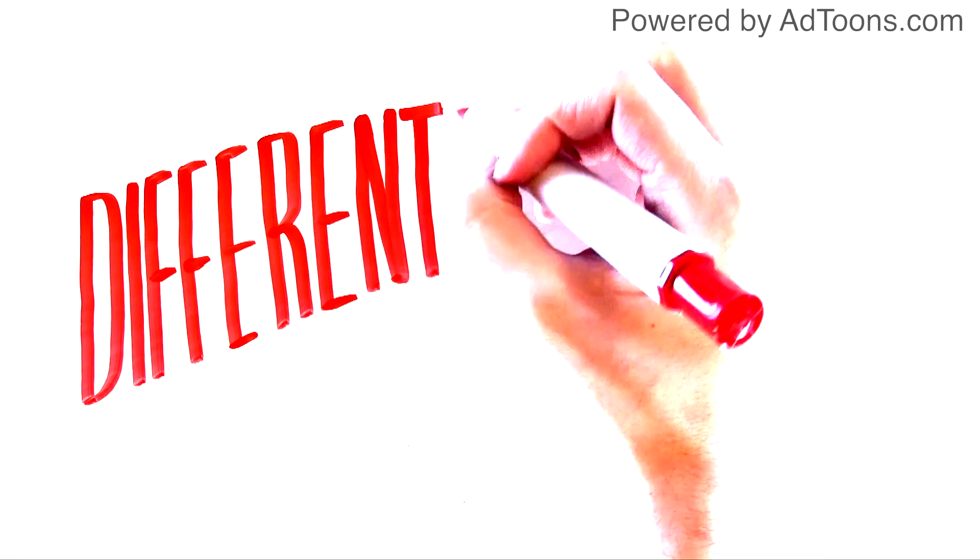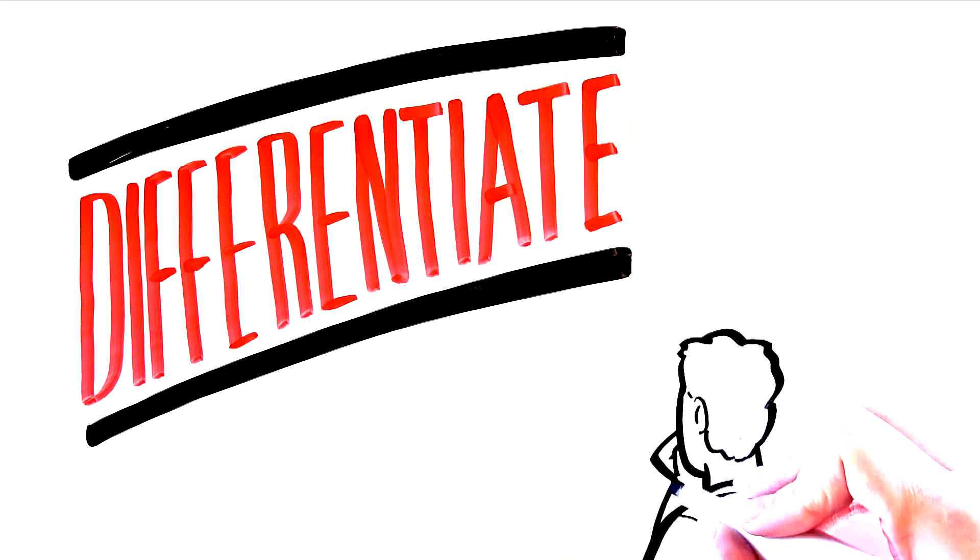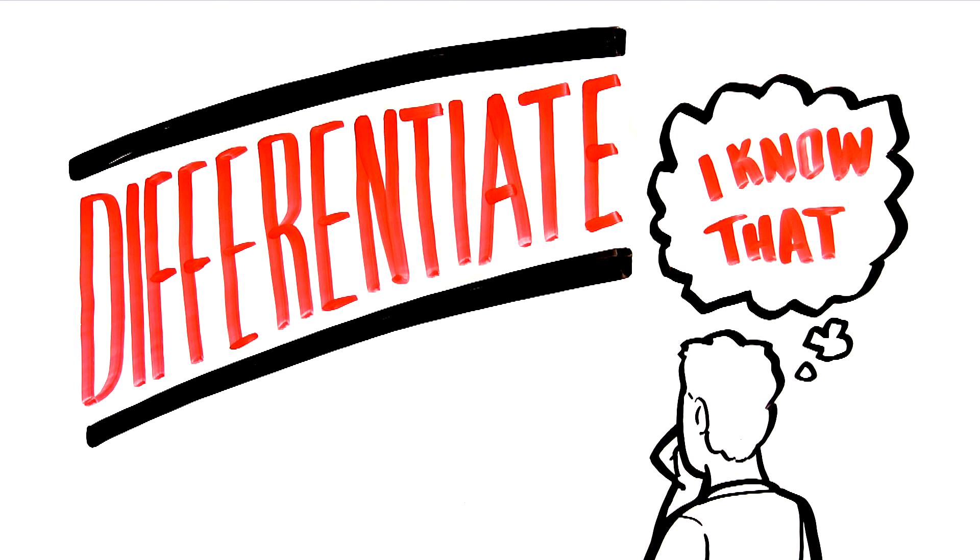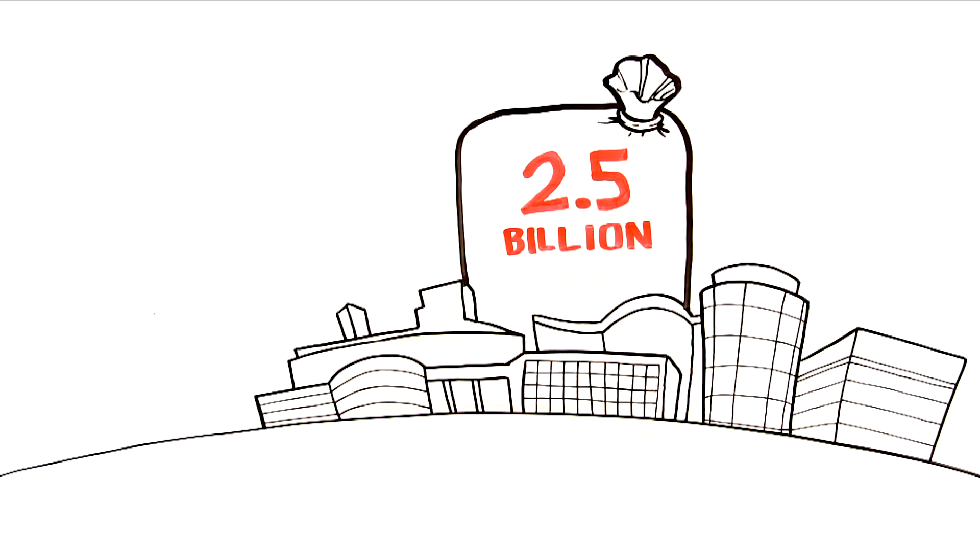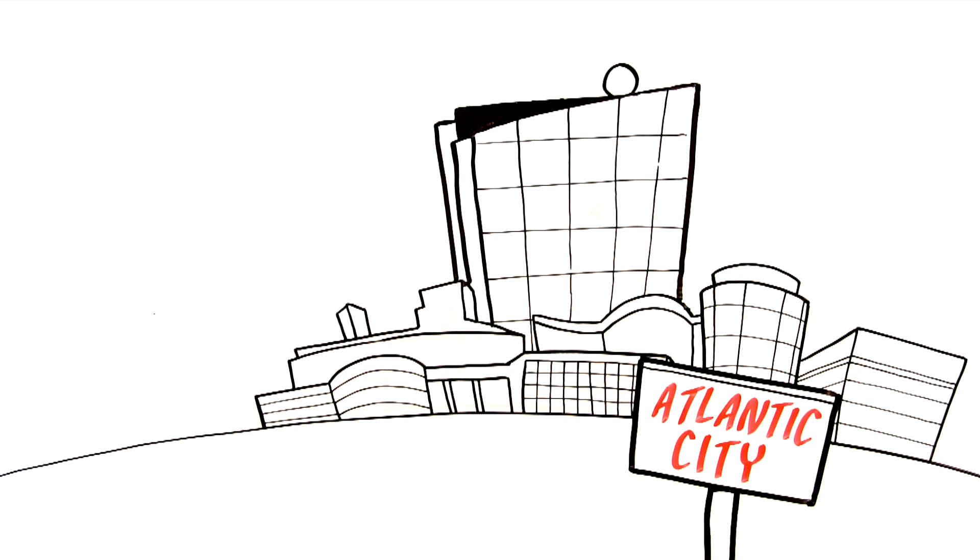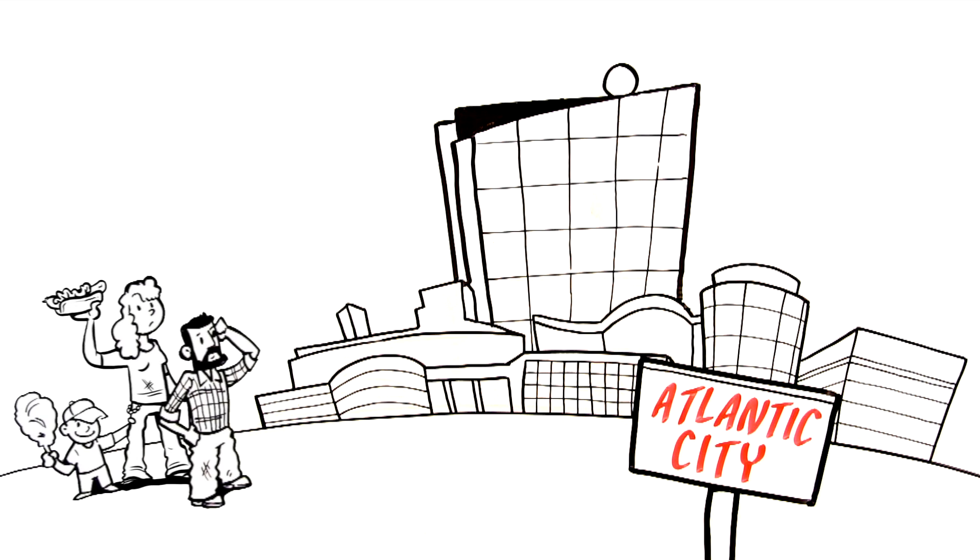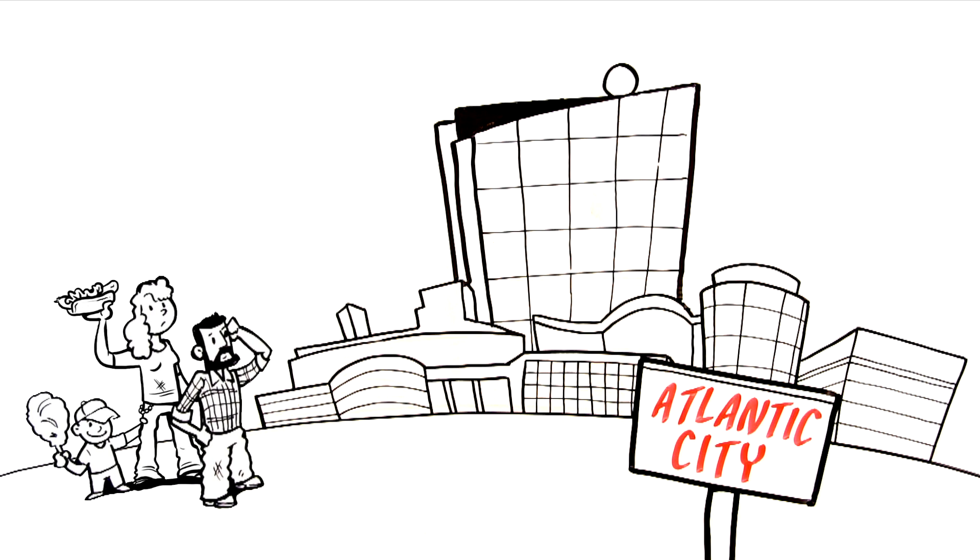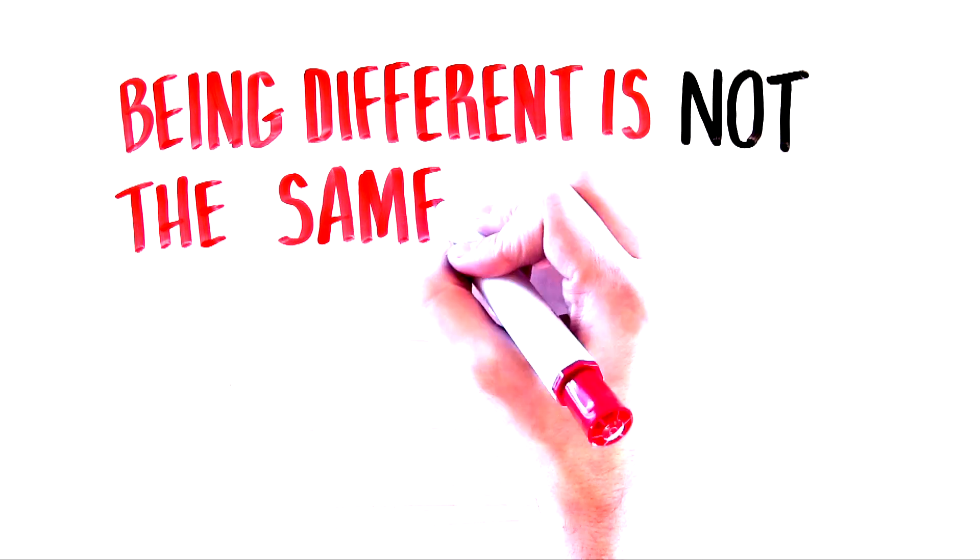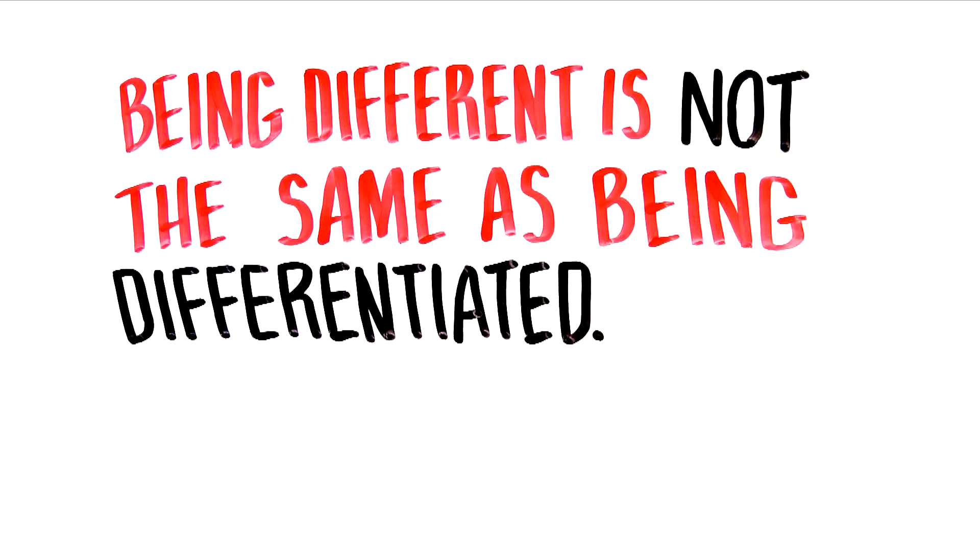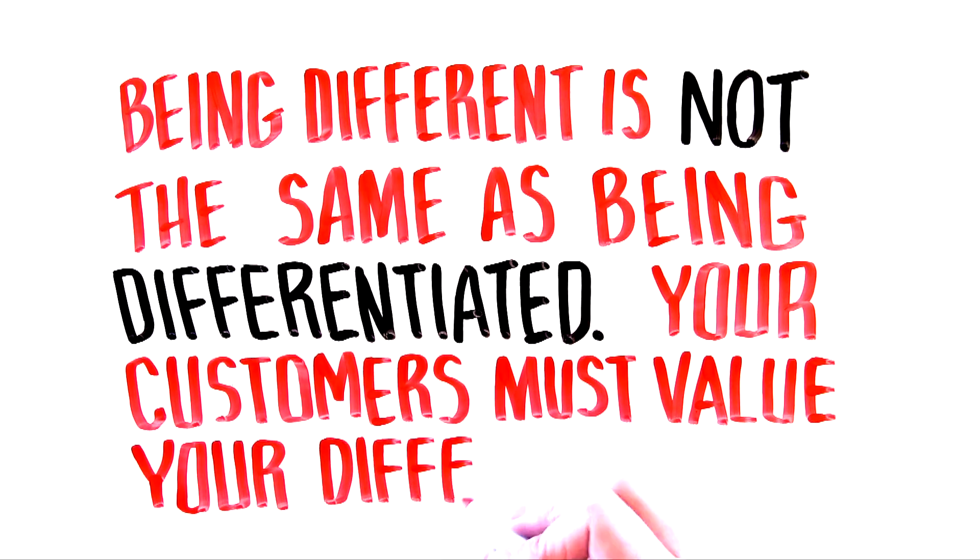The concept of differentiation is difficult. Few companies understand it and getting it wrong can mean disaster. The two and a half billion dollar Revel Casino in Atlantic City was indeed different. It was extraordinarily high-end and classy. Unfortunately, Atlantic City is neither and the casino closed its doors two years after opening. It's important to note that being different is not the same as being differentiated.